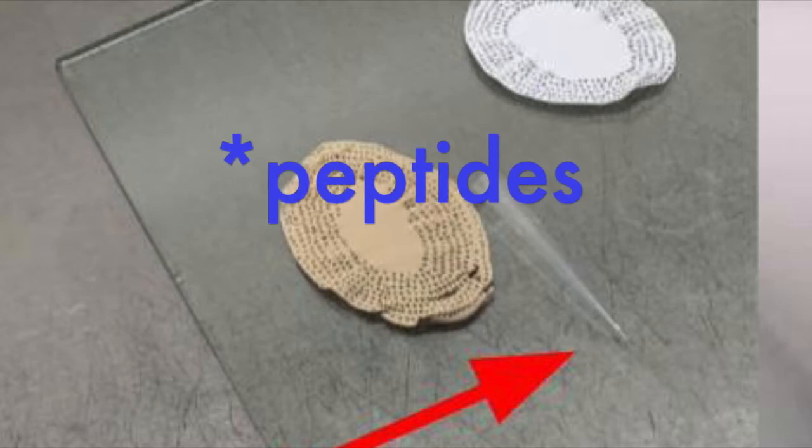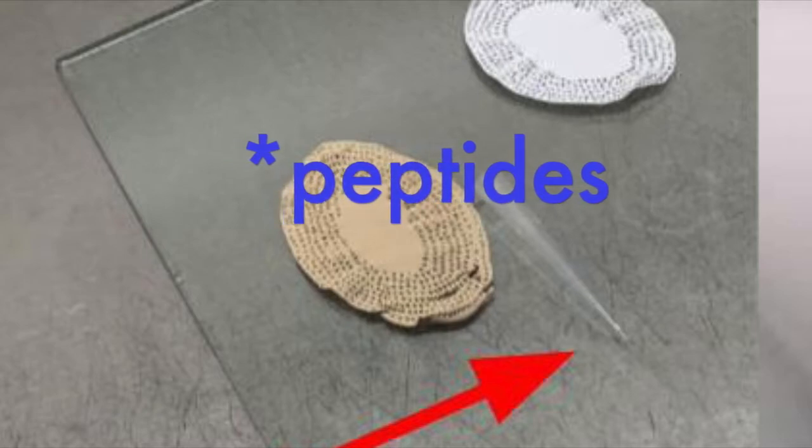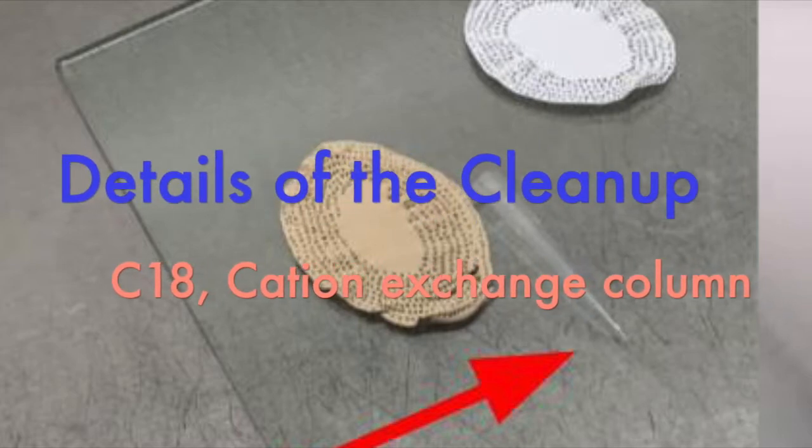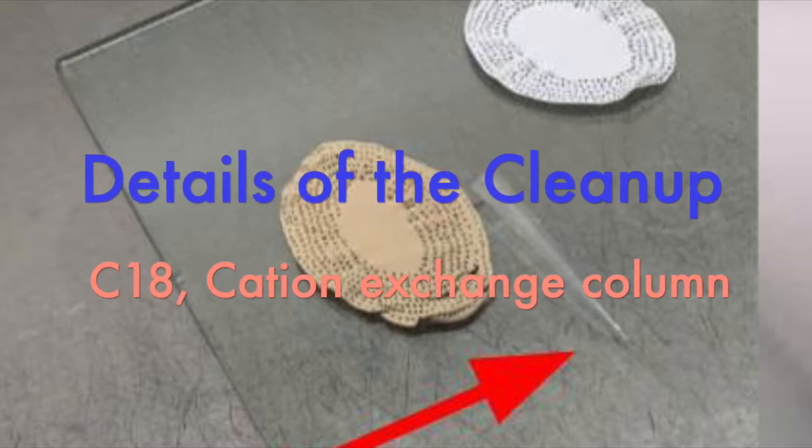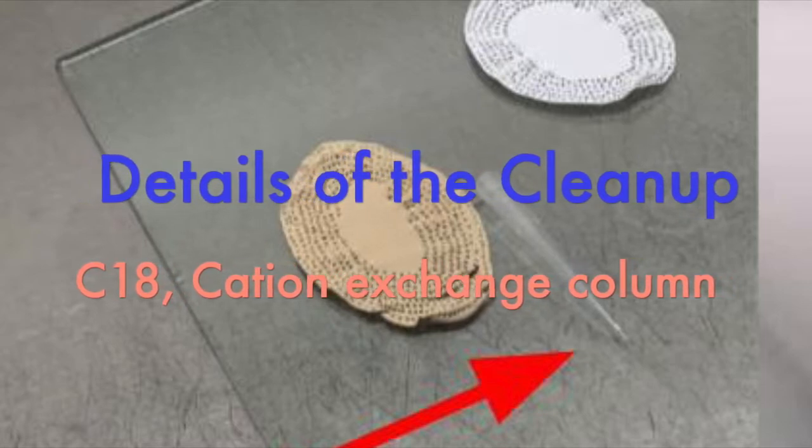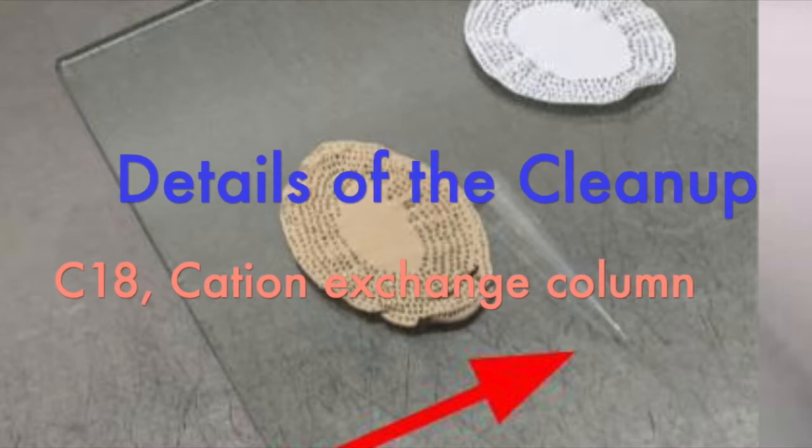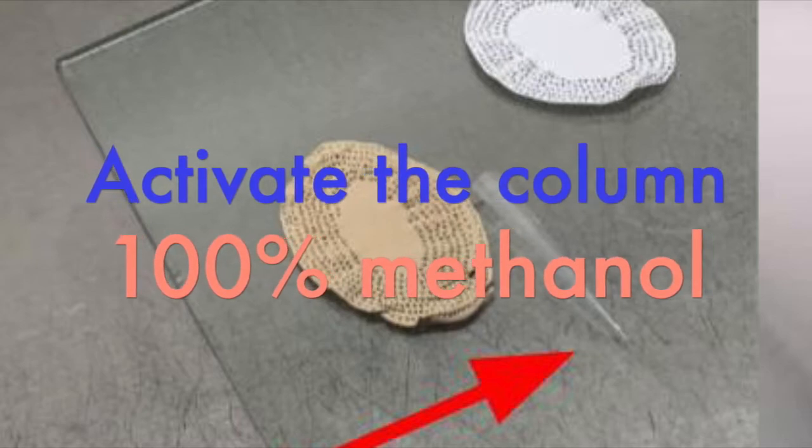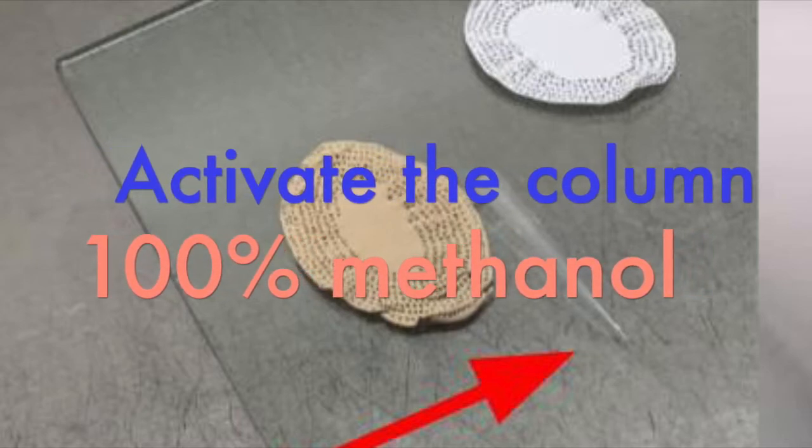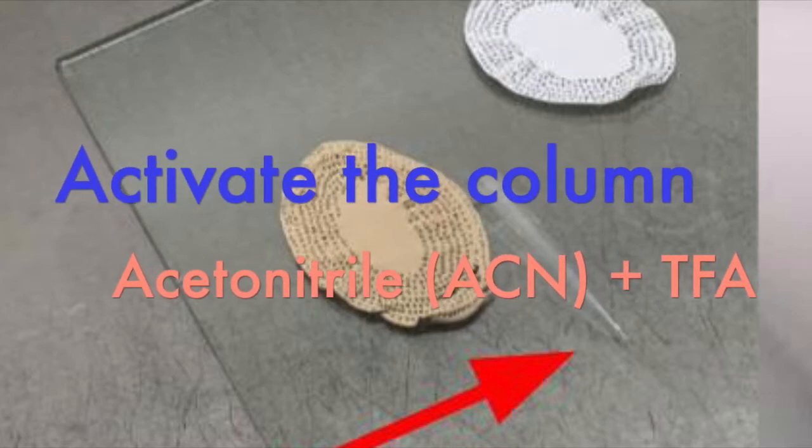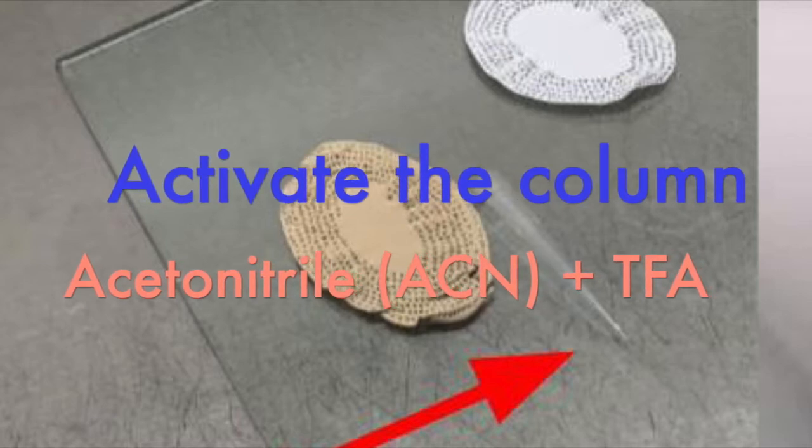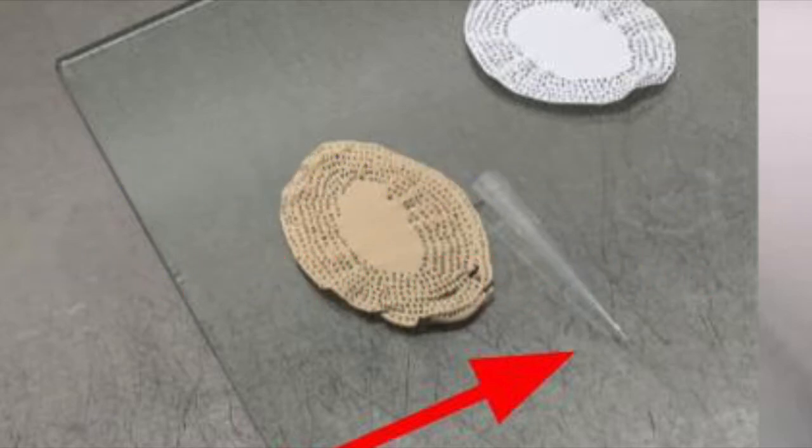You want to go ahead and activate the C18 carbon discs that you're using to desalt. Add methanol and gently spin at 800 RCF for about 30 seconds. Then add a second buffer with 85% ACN with 0.5% TFA and spin for five minutes. Remove any buffer that remains. Lastly, as part of activating the stage tip, add 50 microliters of a buffer that contains 5% ACN and 0.5% TFA.